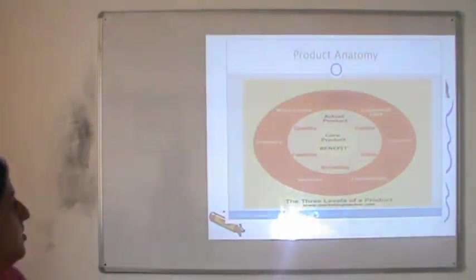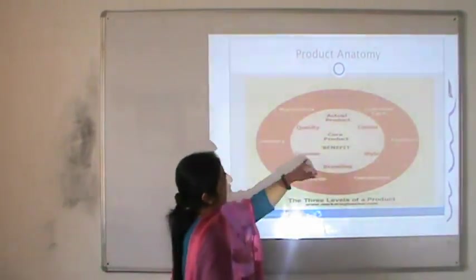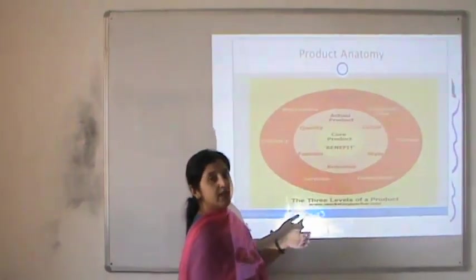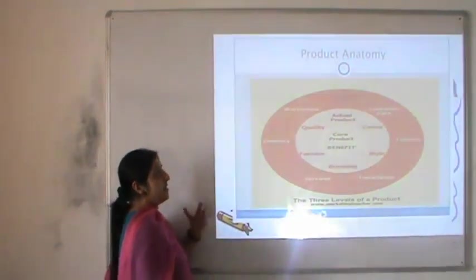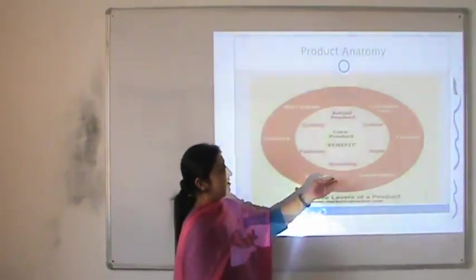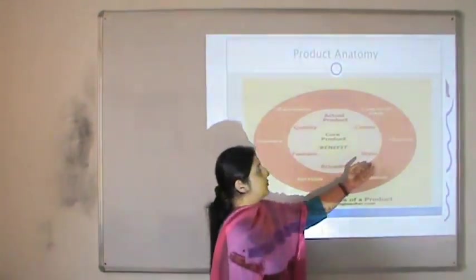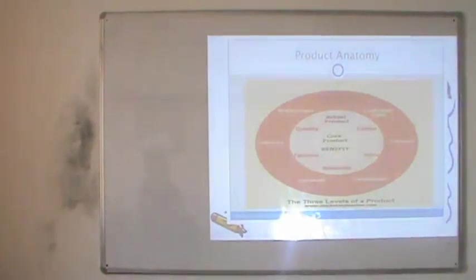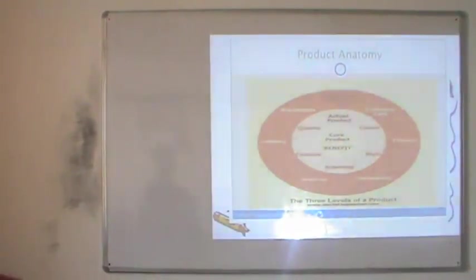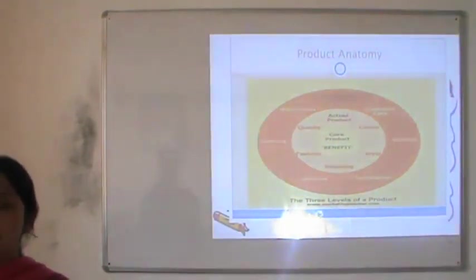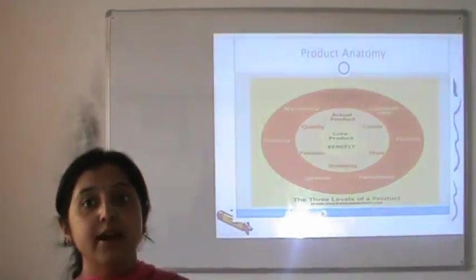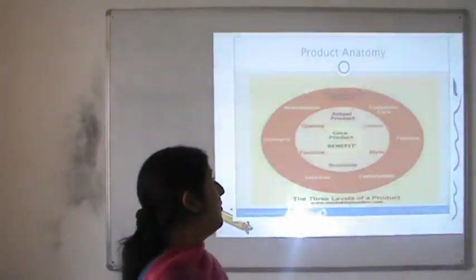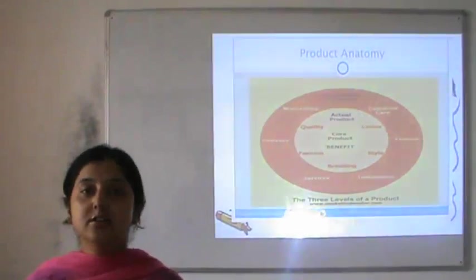Products are bought for the core benefit at the most basic level. Then we have the actual product — in today's time consumers have many choices, so they expect basic quality, a good brand name, and preferred style or color. There is also a third level known as the augmented product, where sellers can make a difference by offering tailor-made, customized offerings such as customer care, installation facilities, free home deliveries, warranties, or added services.